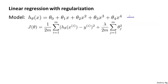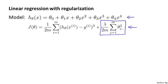Suppose we're fitting a high-order polynomial like that shown here. But to prevent overfitting, we're going to use regularization like this. We have this regularization term to try to keep the values of the parameters small. The regularization sums from j equals 1 to m rather than j equals 0 to m.